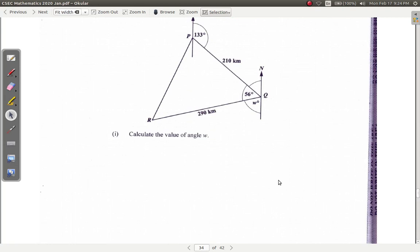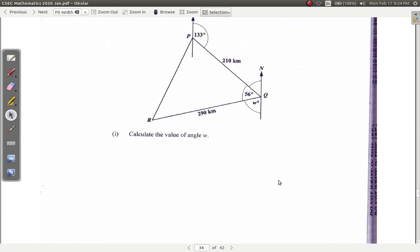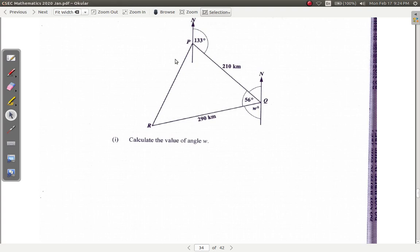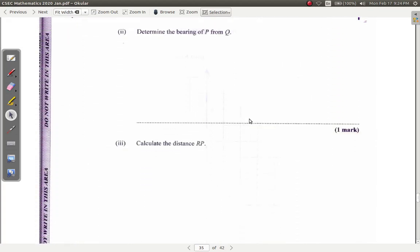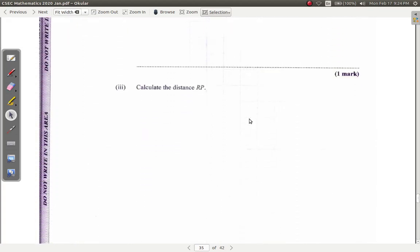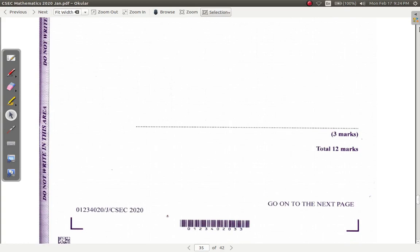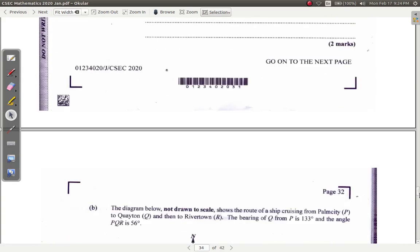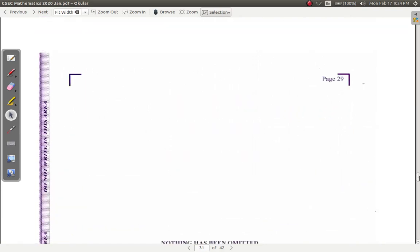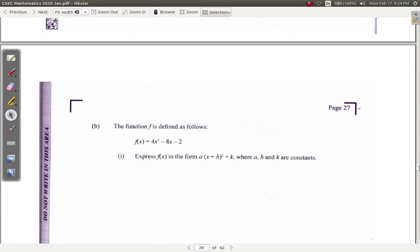Then you have a bearing question. Calculate the angle W. Determine the bearing of P from Q and the distance RP. That's question 9. Let's see what question 8 says.